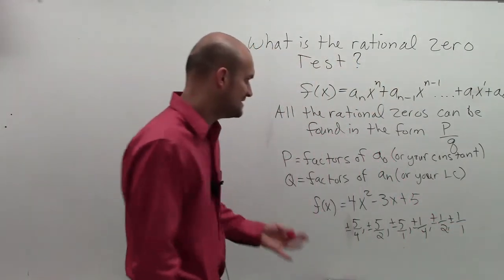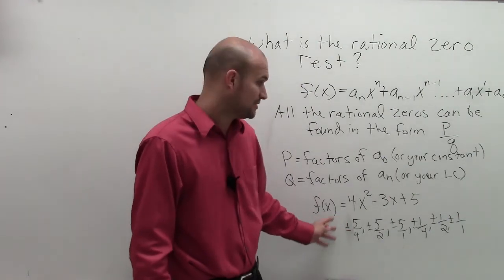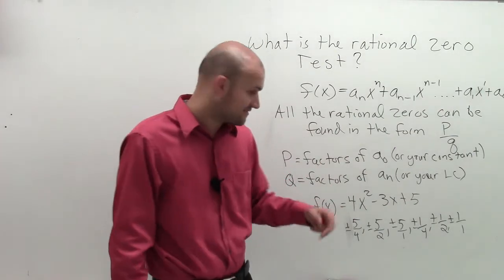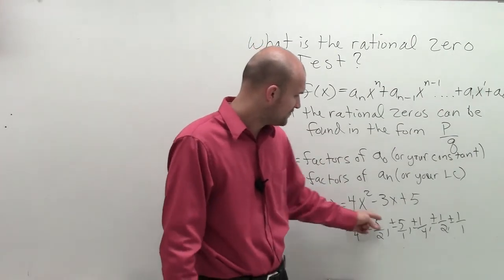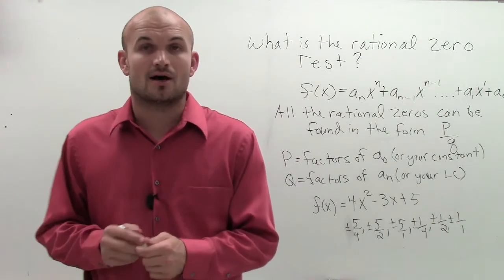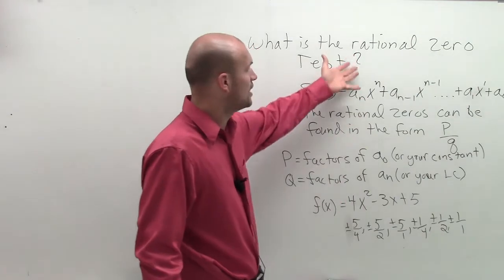So you can see these are all the possibilities. I have two possibilities for each one of these, the positive and the negative. So therefore, there's a total of 2, 4, 6, 8, 10, 12. There's a possible 12 rational zeros that I could choose between that would actually be the rational zero of this.